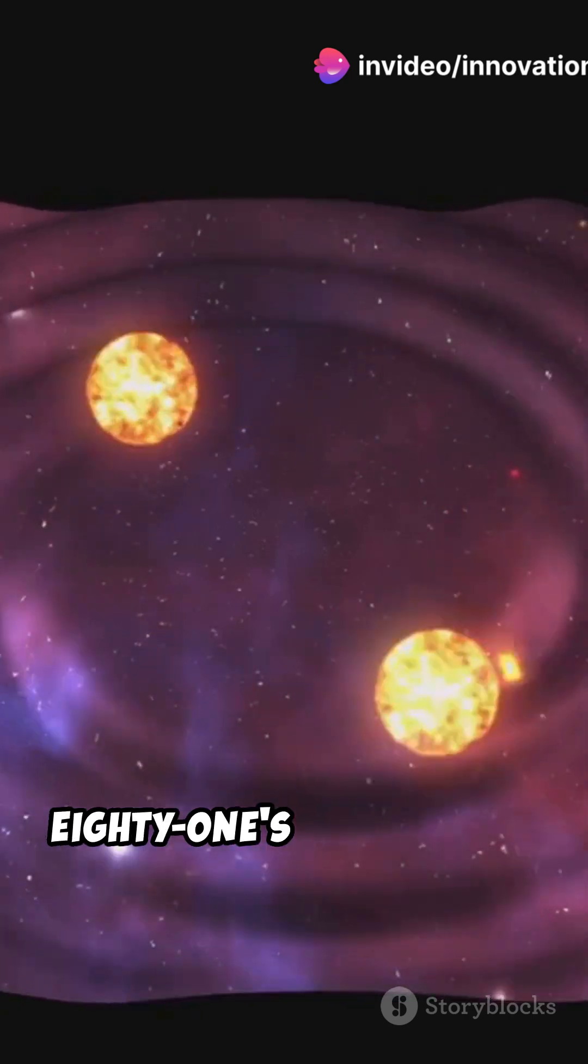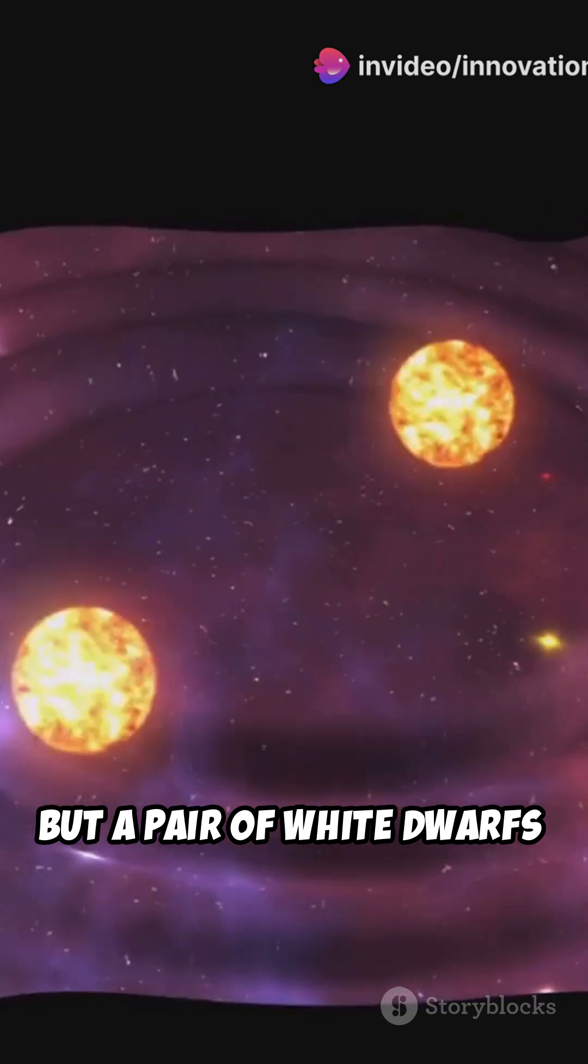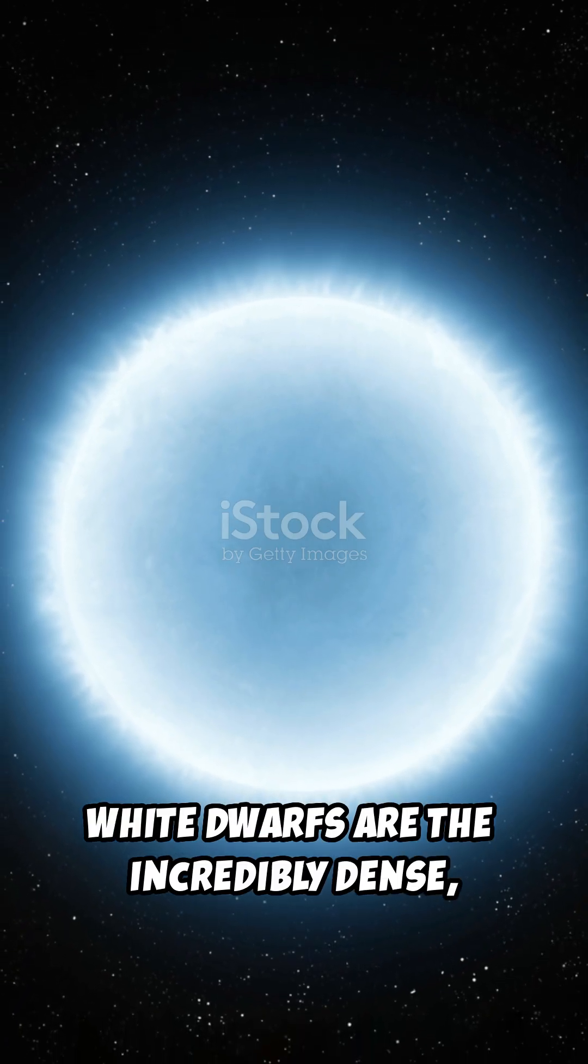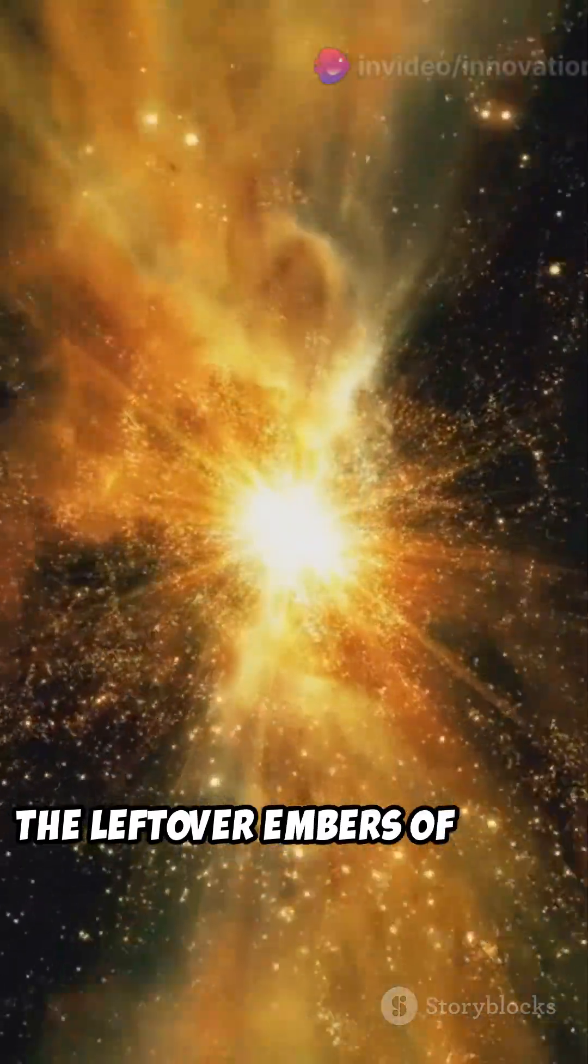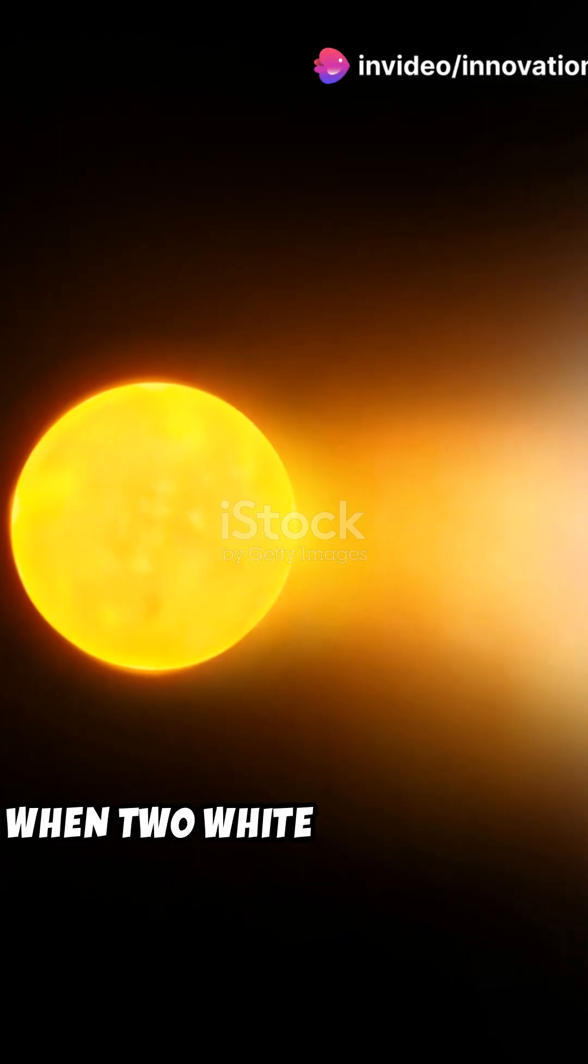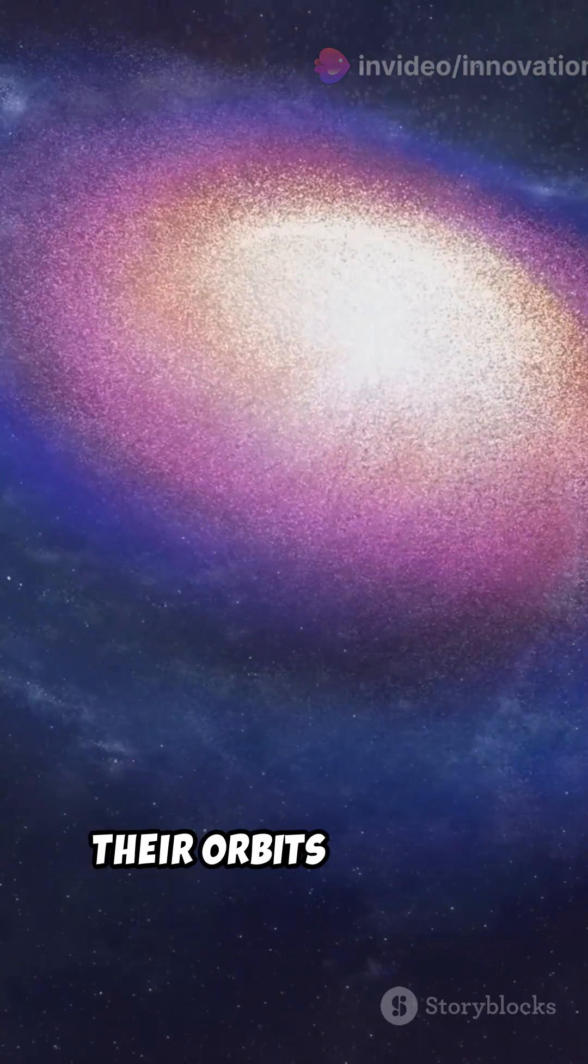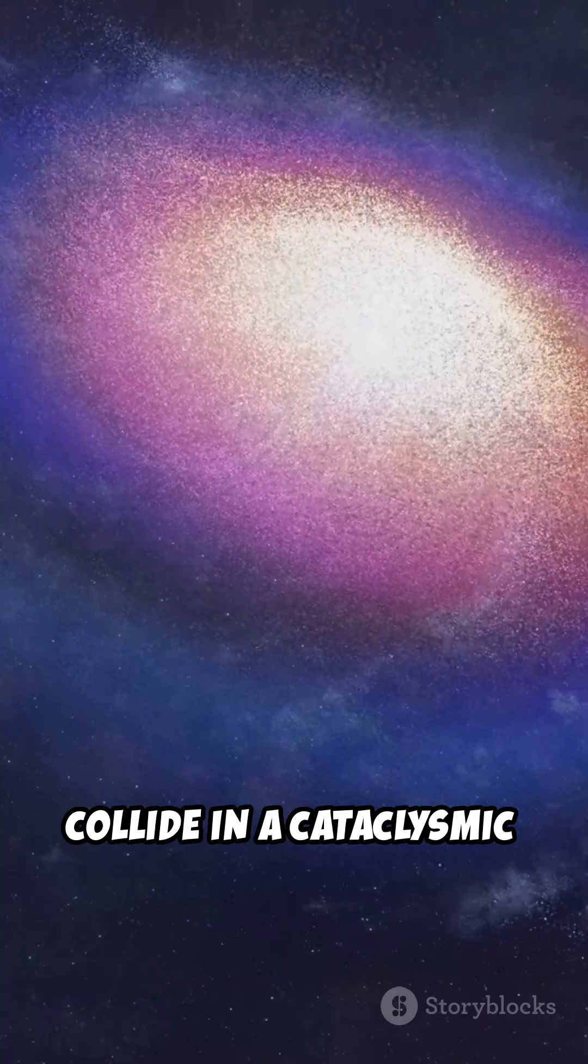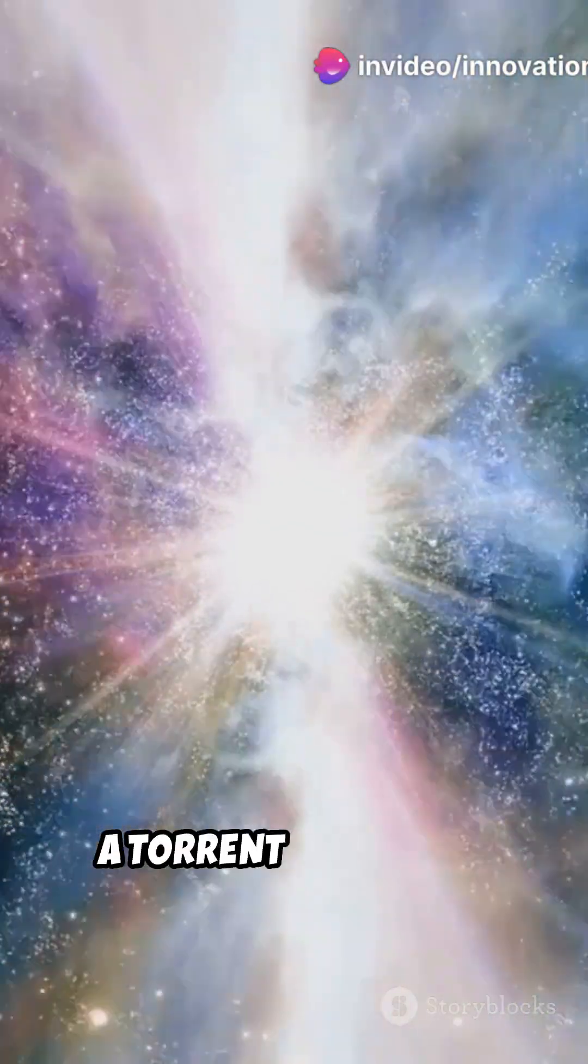The culprit behind SN 1181's spectacular display was not a single star but a pair of white dwarfs locked in a deadly embrace. White dwarfs are the incredibly dense, Earth-sized cores of dead stars—the leftover embers of once mighty suns. When two white dwarfs orbit each other, their gravitational dance can be fatal. Over eons, their orbits tighten, spiraling closer and closer until they collide in a cataclysmic explosion. This merger of stellar remnants unleashes a torrent of energy.